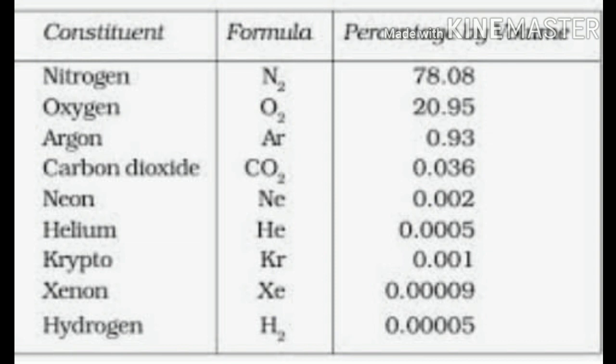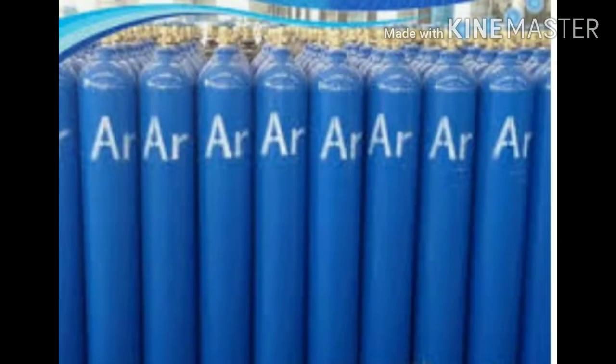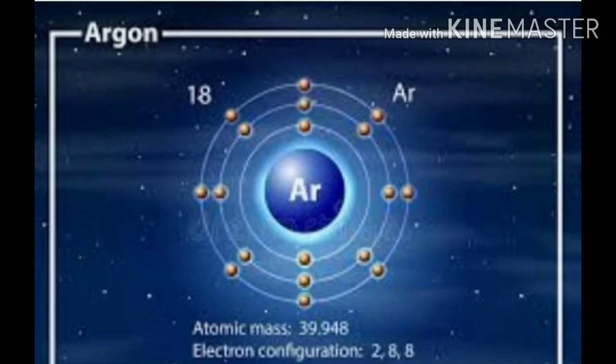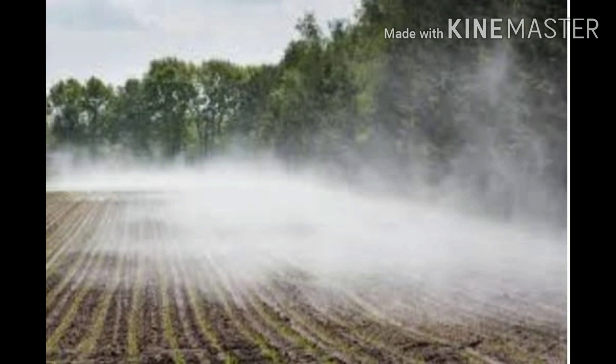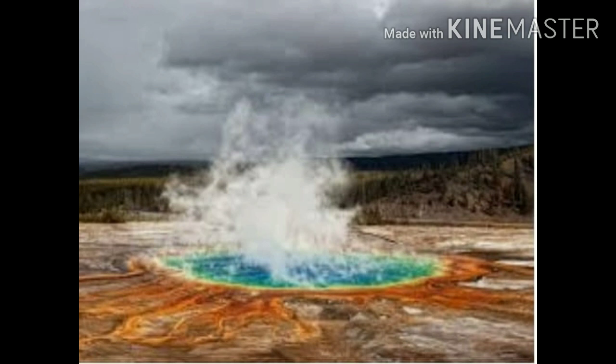The remaining one percent of air is made up of a number of gases including carbon dioxide, water vapor, helium, hydrogen, argon, ozone, and others. Carbon dioxide is needed by plants for their survival. Carbon dioxide and water help plants to grow. Rain and snowfall, which provide most of the water to plants, come from the water vapors present in the lower layers of the atmosphere.